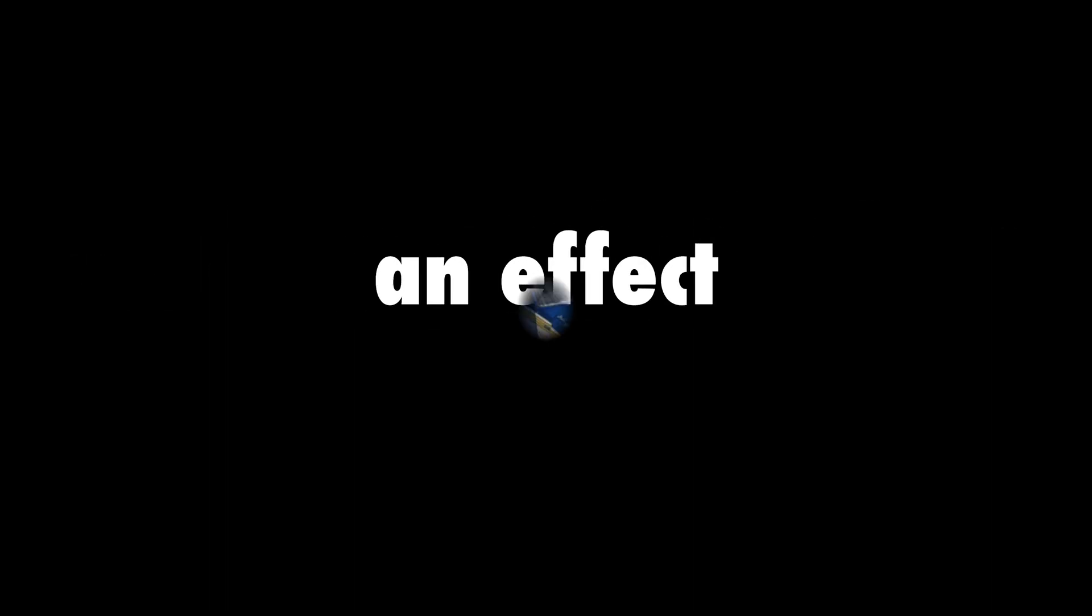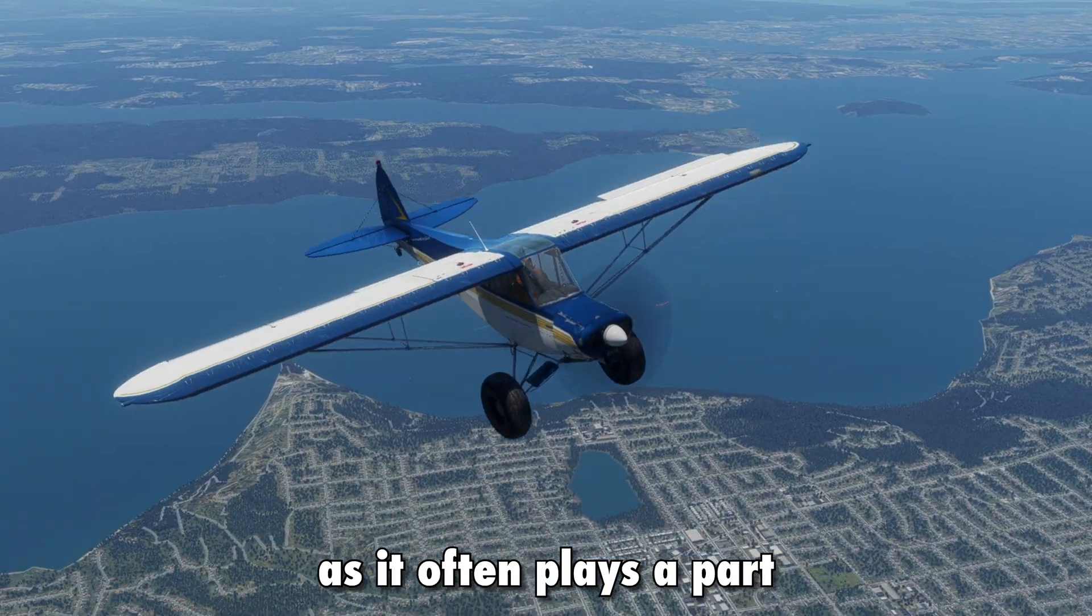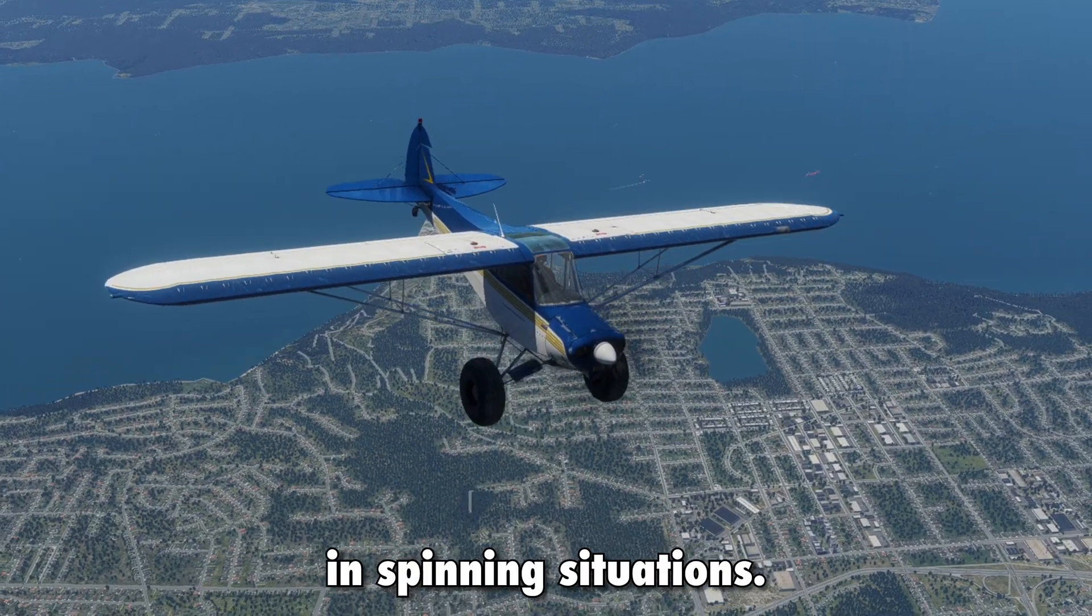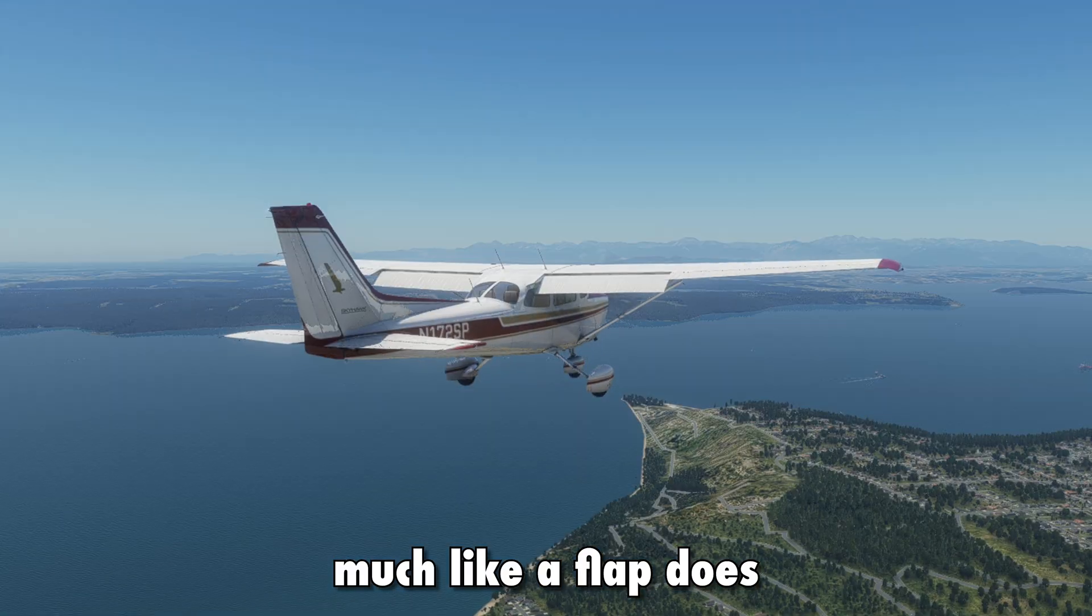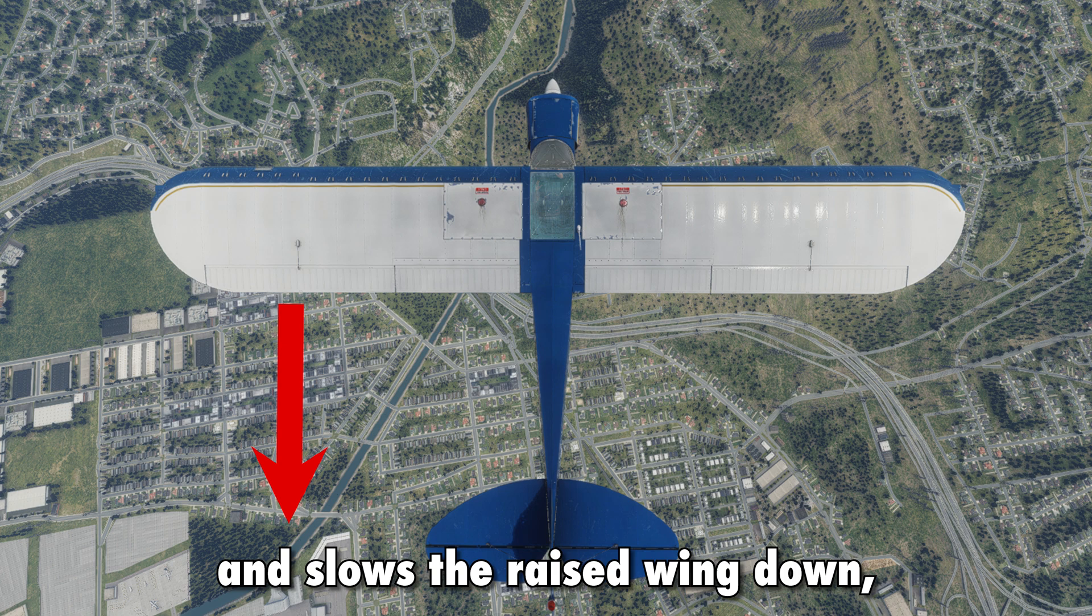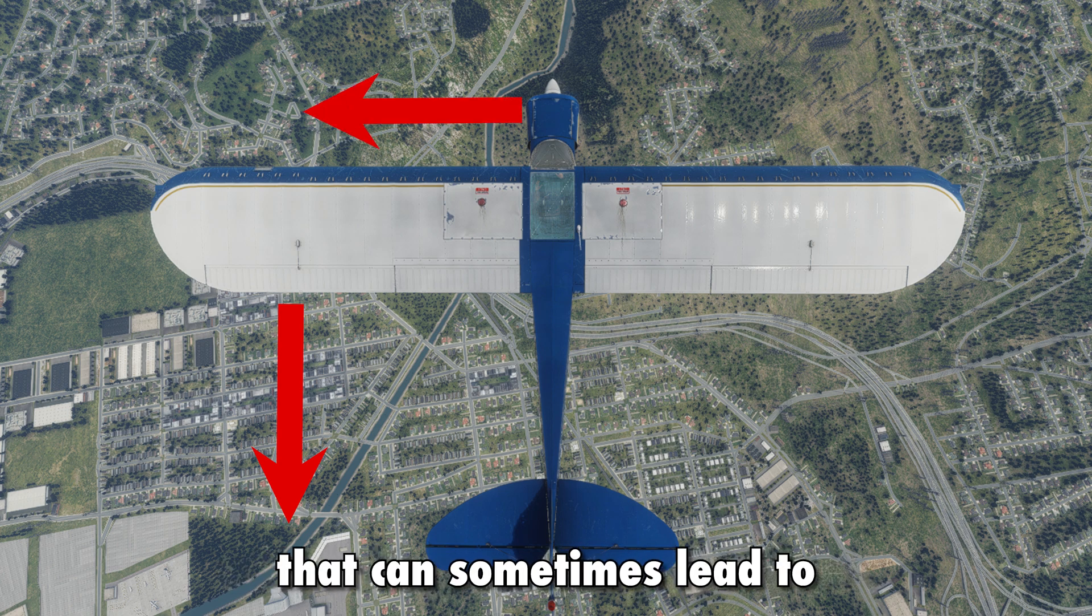Probably one of the most important instances where induced drag has an effect is adverse yaw, as it often plays a part in spinning situations. The lowered aileron creates induced drag, much like a flap does, and slows the raised wing down, creating a yawing motion that can sometimes lead to or aggravate a spin.